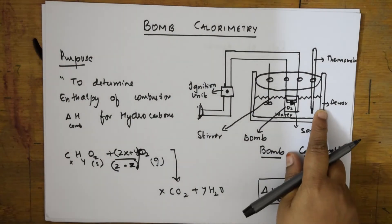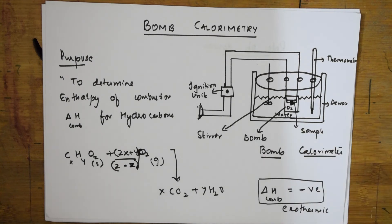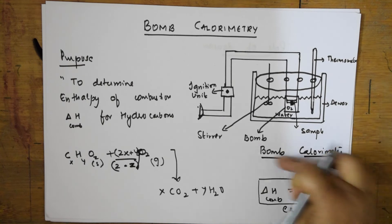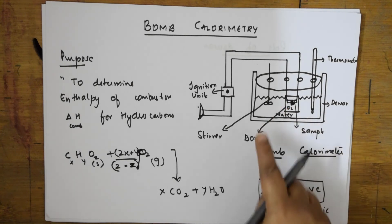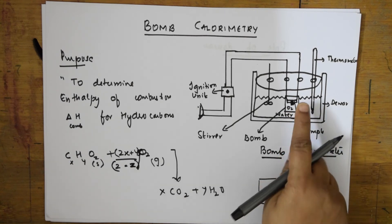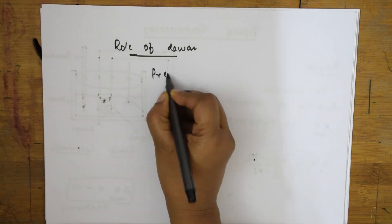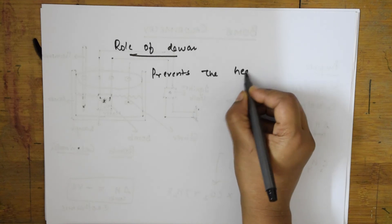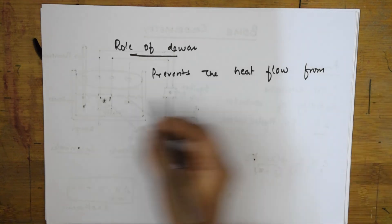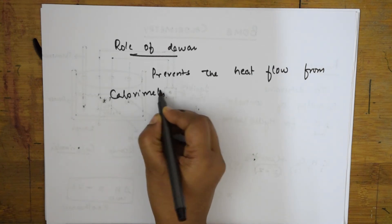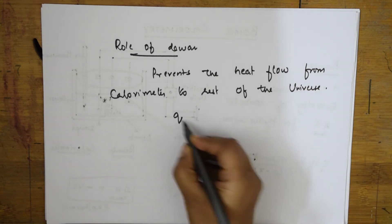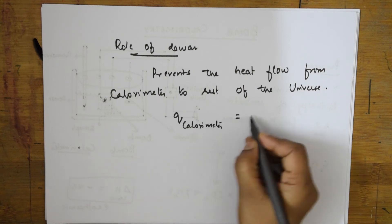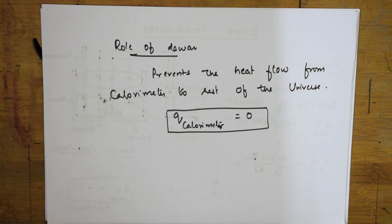The DEWAR prevents the heat flow from the calorimeter to the rest of the universe. The system is inside and the surrounding is the universe. Whatever heat is inside the system is prevented from going out to the universe — it prevents the flow of heat from the calorimeter to the rest of the universe. That means Q_universe equals zero, because no heat is allowed to flow to the universe.